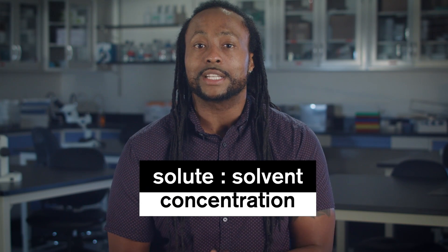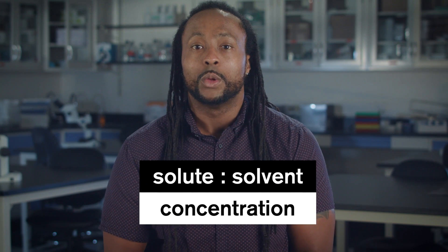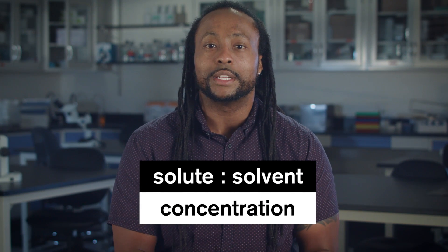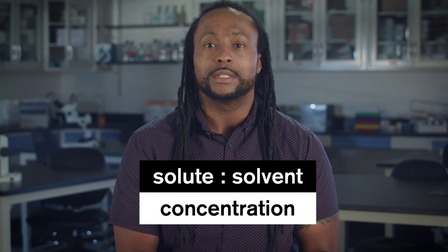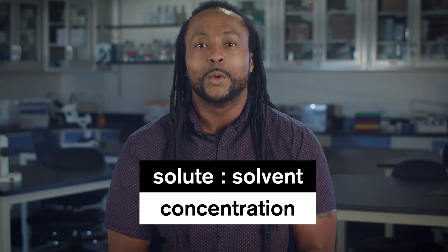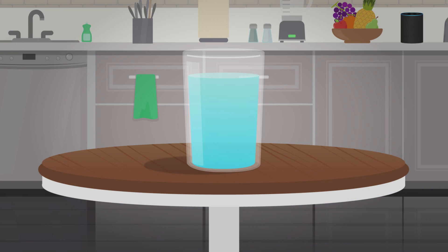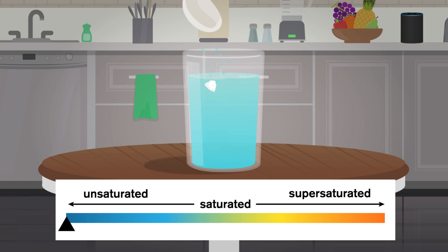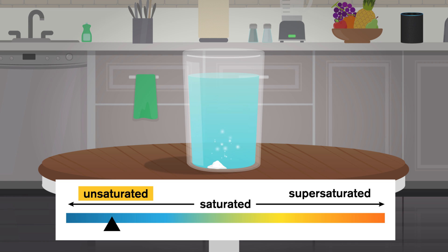The amounts of solute and solvent are also very important in determining solubility. We call the ratio of solute to solvent in a solution the concentration. We'll talk more about concentration in future episodes, but for now we just need to know why it affects solubility. If we add a tiny amount of salt to a big glass of water, we'll have an unsaturated solution — there's less than the maximum amount of solute that solvent is capable of dissolving.